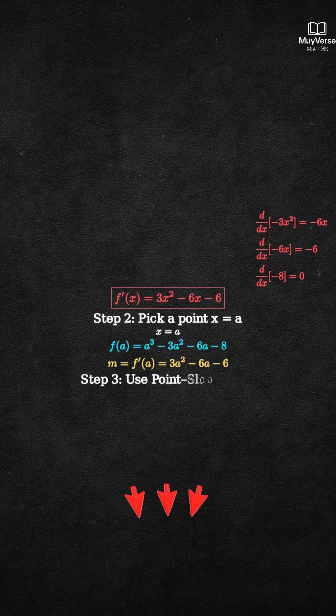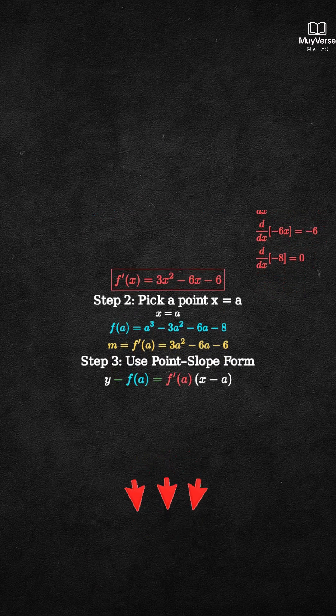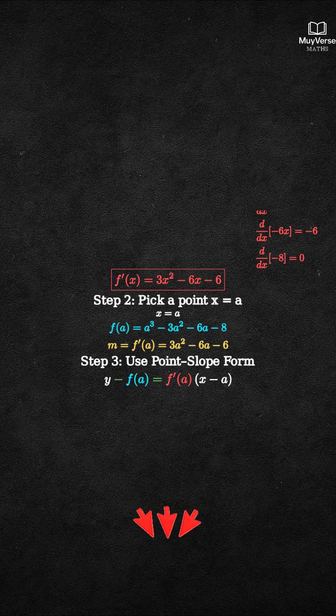Step 3: Use the point-slope form. y minus f(a) equals f prime of a times x minus a. This is the equation of the tangent line at x equals a.